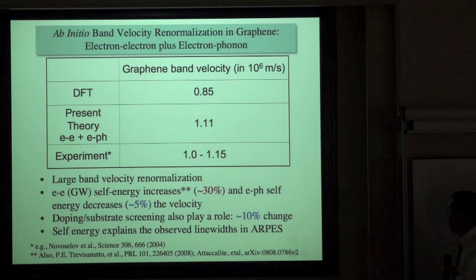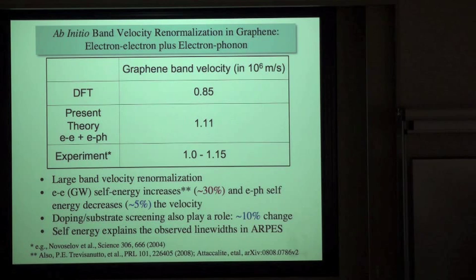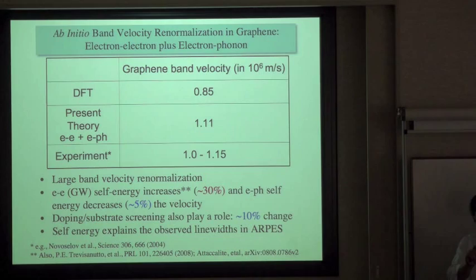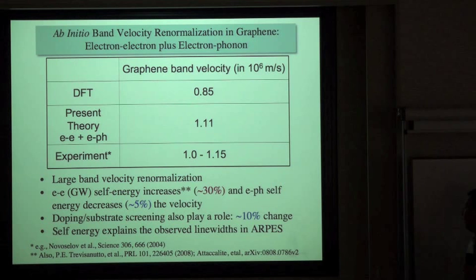Many-body interactions lead to a very large band velocity renormalization. Electron-electron interaction increases the band velocity by 30%, while electron-phonon interaction decreases it by about 5%. Doping and substrate screening also contribute changes of the order of 10%, explaining the variation observed across different experimental setups. The self-energy calculations also explain the observed linewidths in angle-resolved photoemission.